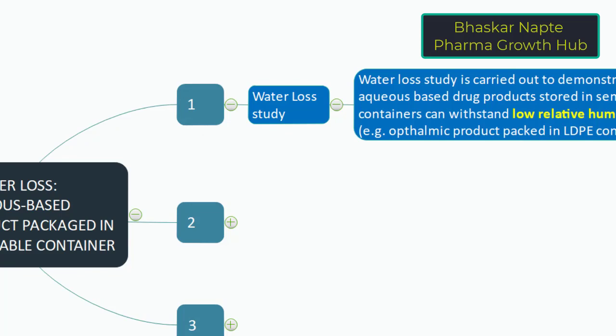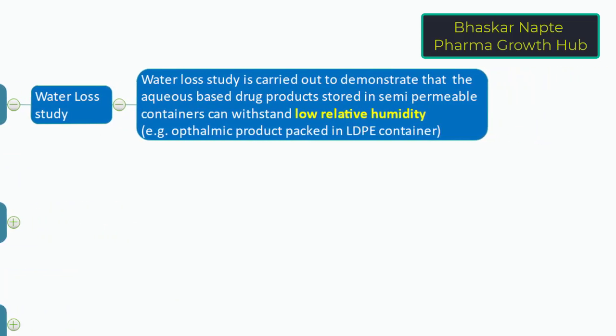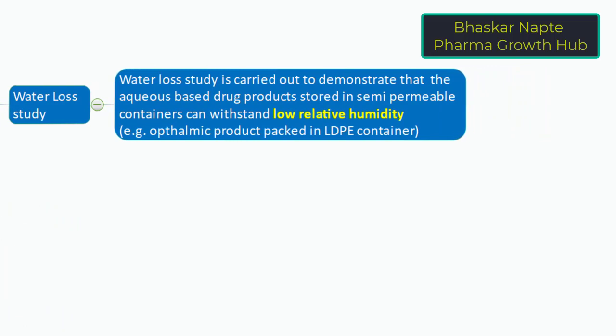The ICH guideline Q1AR2, which covers stability studies in new drug substances and products, includes the requirement for water loss study for aqueous-based drug products packaged in a semi-permeable container. The statement is: water loss study is carried out to demonstrate that aqueous-based drug products stored in semi-permeable containers can withstand low relative humidity.